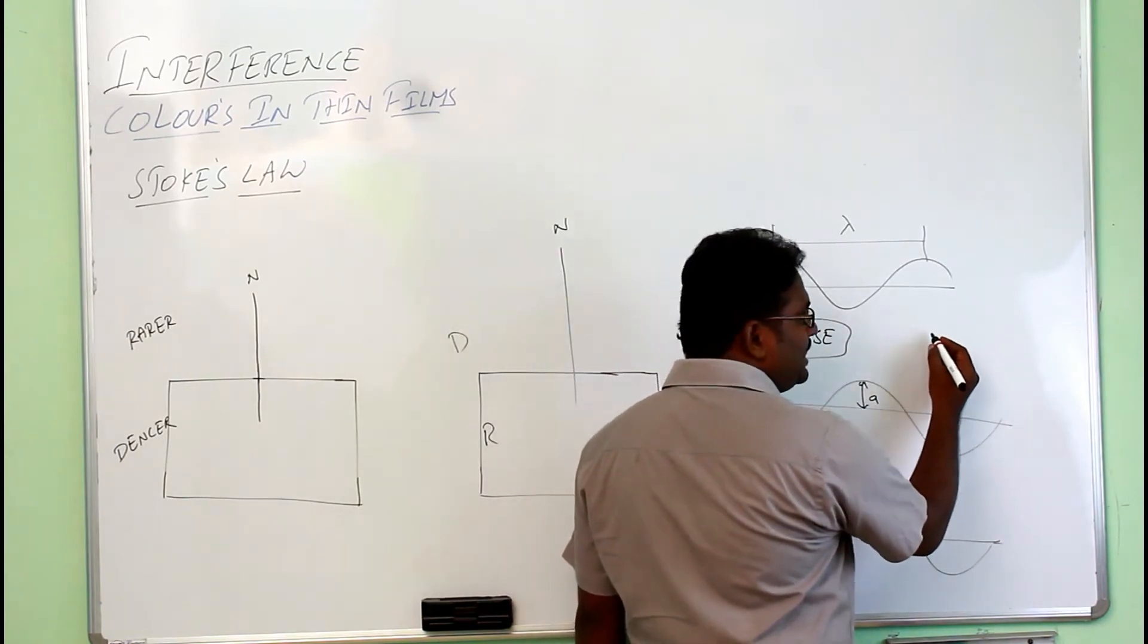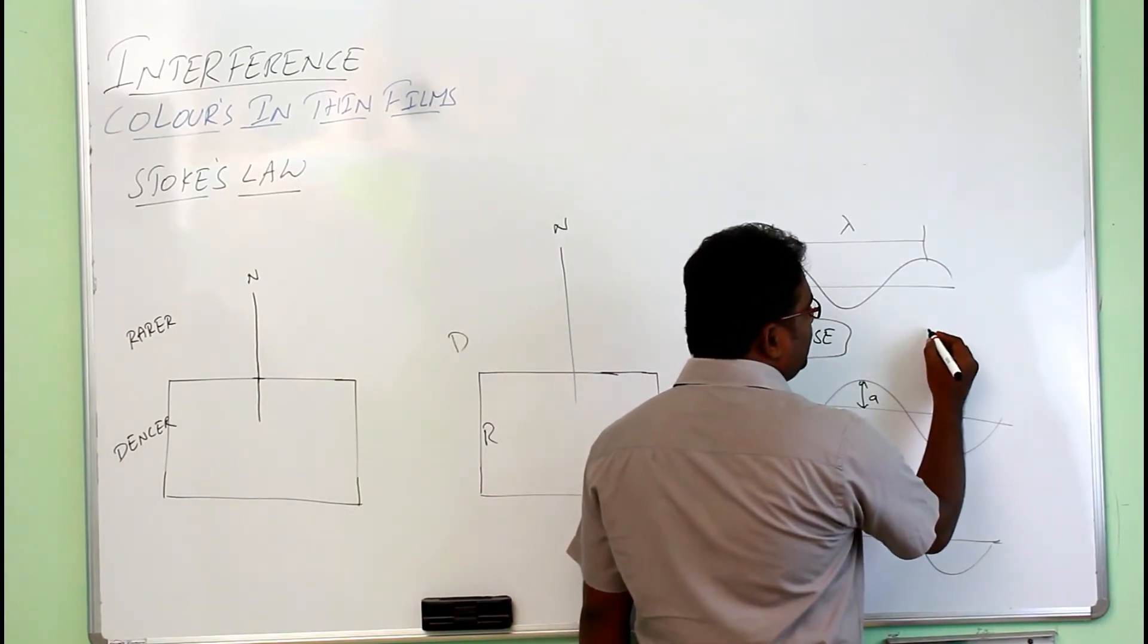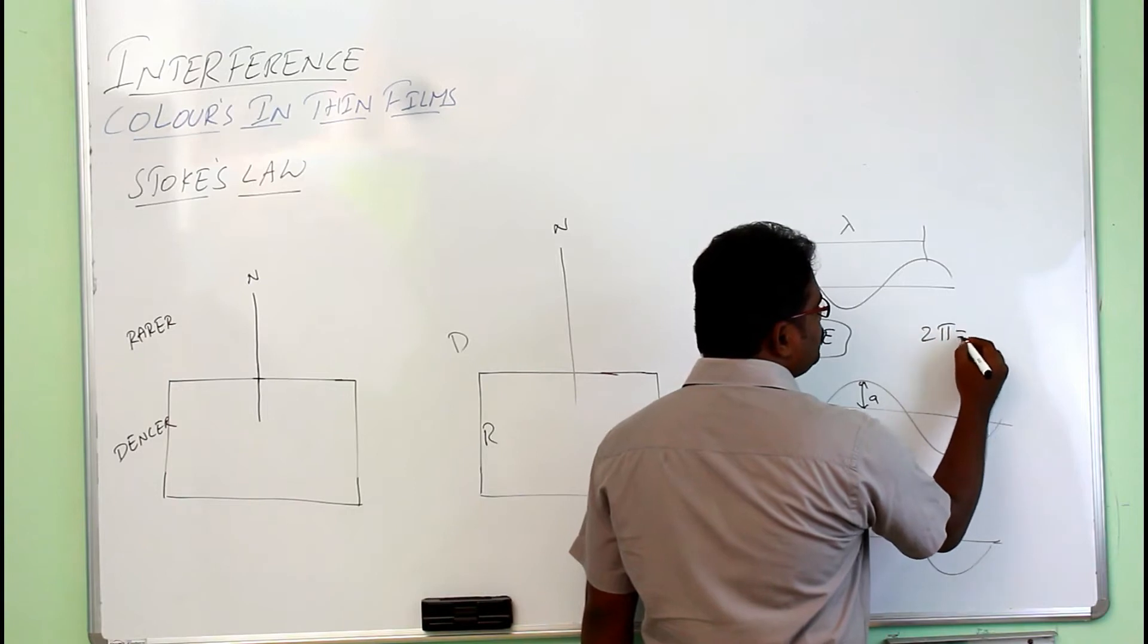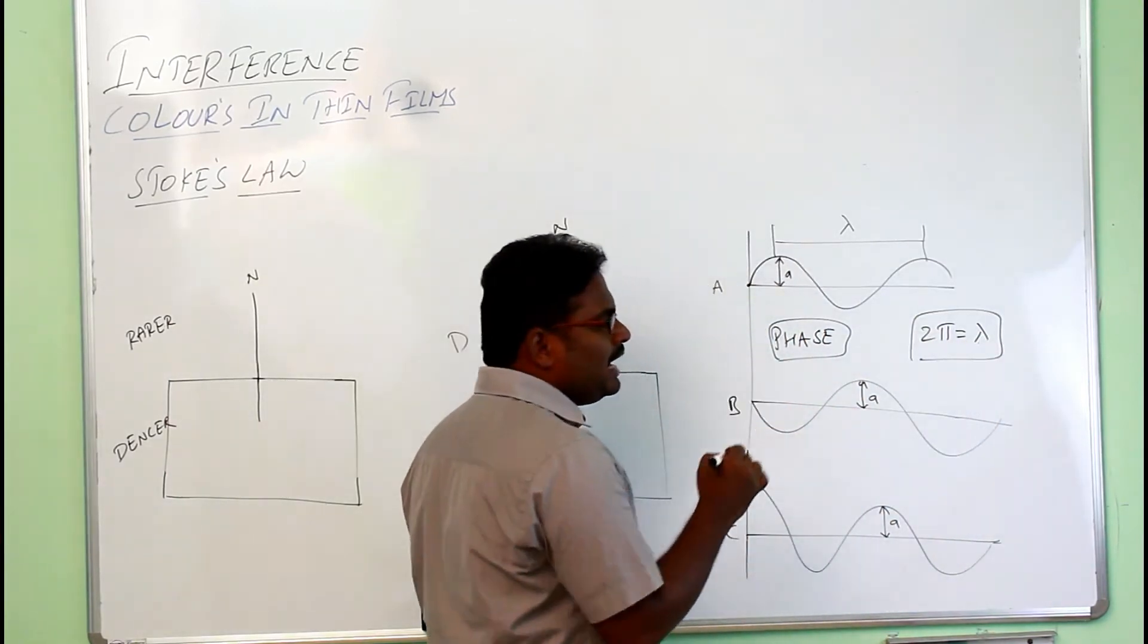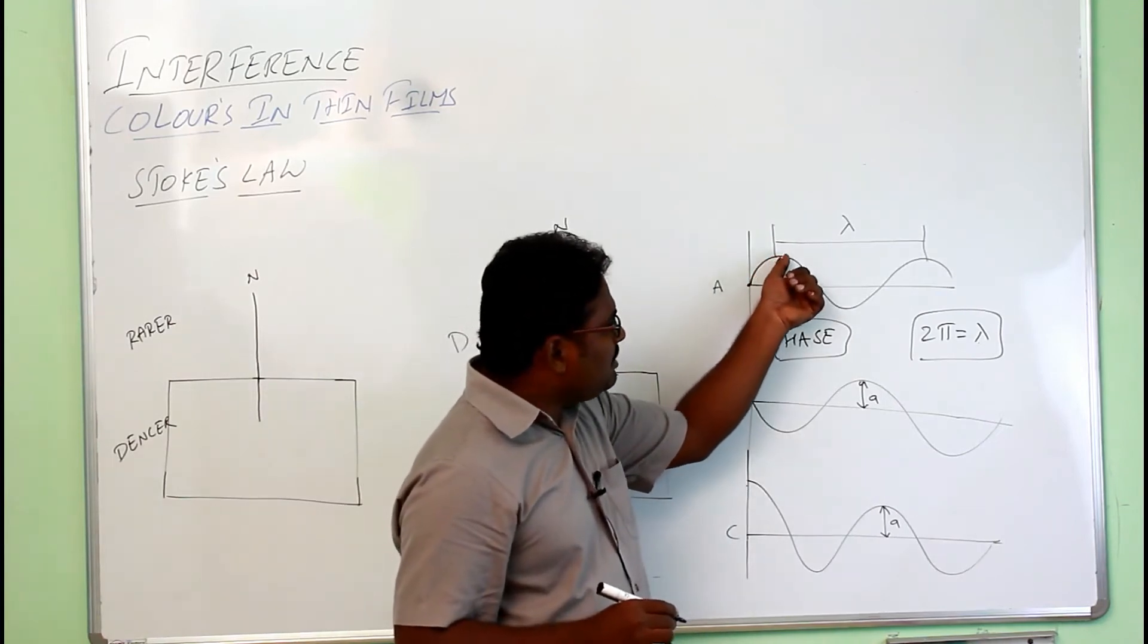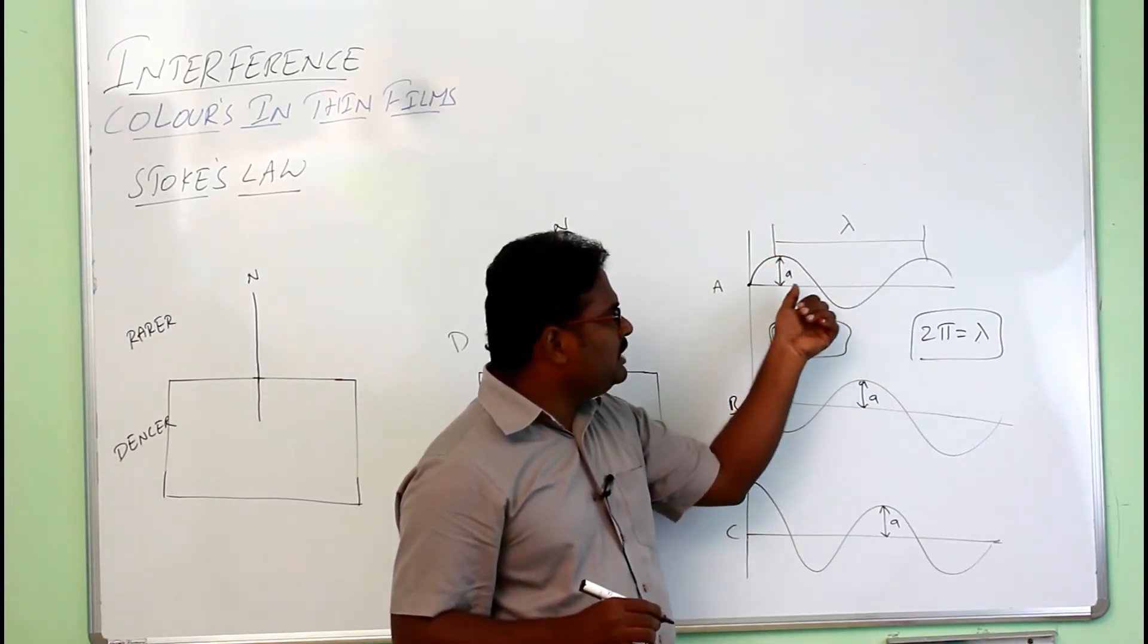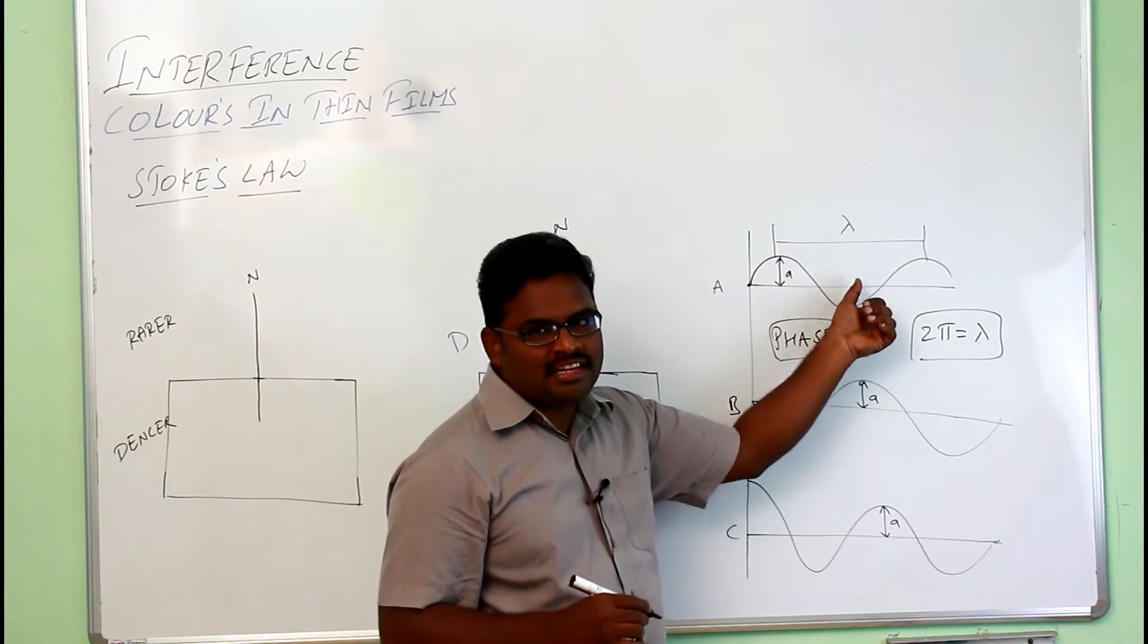The relation between A and B, or the path difference and the phase difference is pi. 2 pi equals lambda, where lambda is the wavelength, 2 pi is the total angle. If it is completed one cycle of operation, then it is completing an angle of 360 degrees.